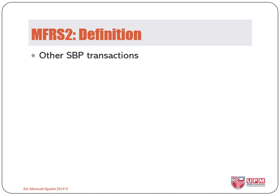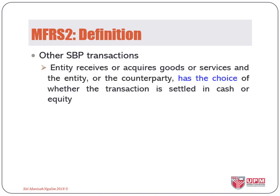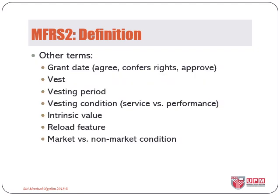For the third category of SBP transactions, it results in receiving goods or services with a choice of either settlement. For grant date, this is the date at which the entity and its counterparties agreed to a share-based payment agreement, of which both parties must understand the terms and conditions attached to the SBP scheme.